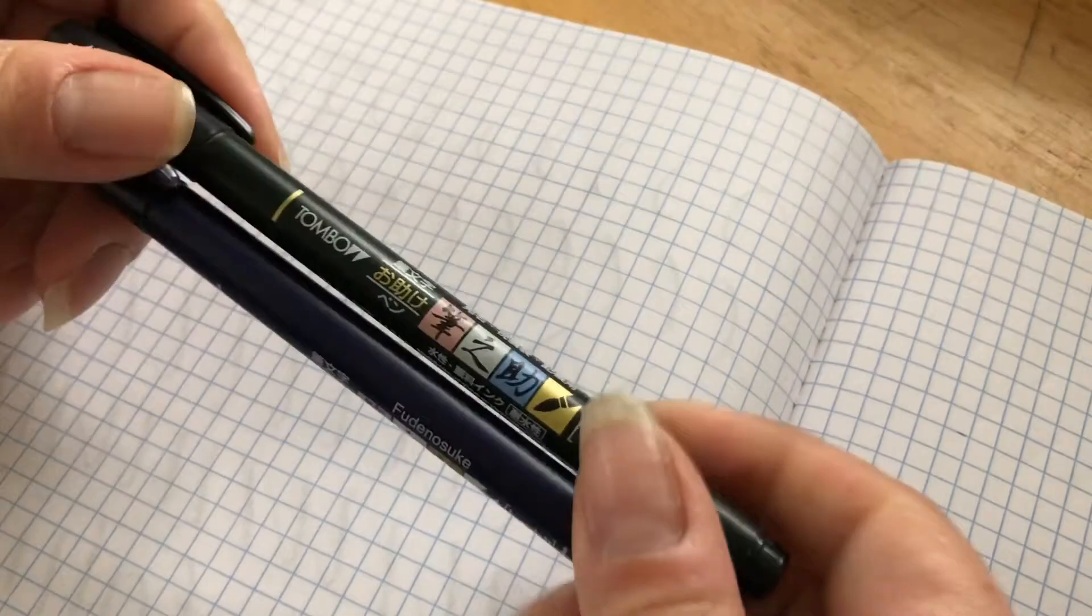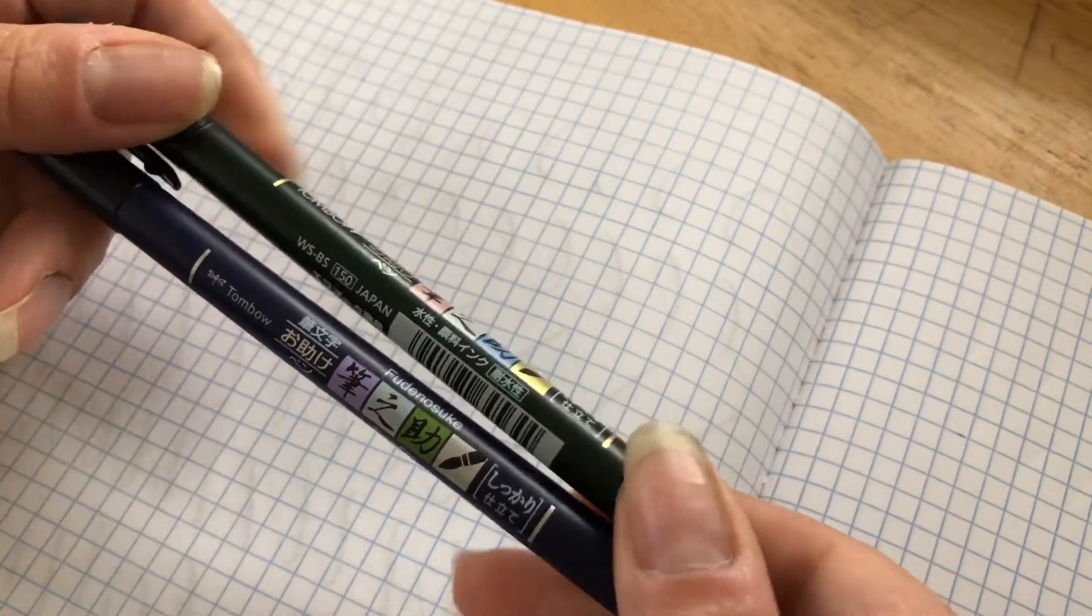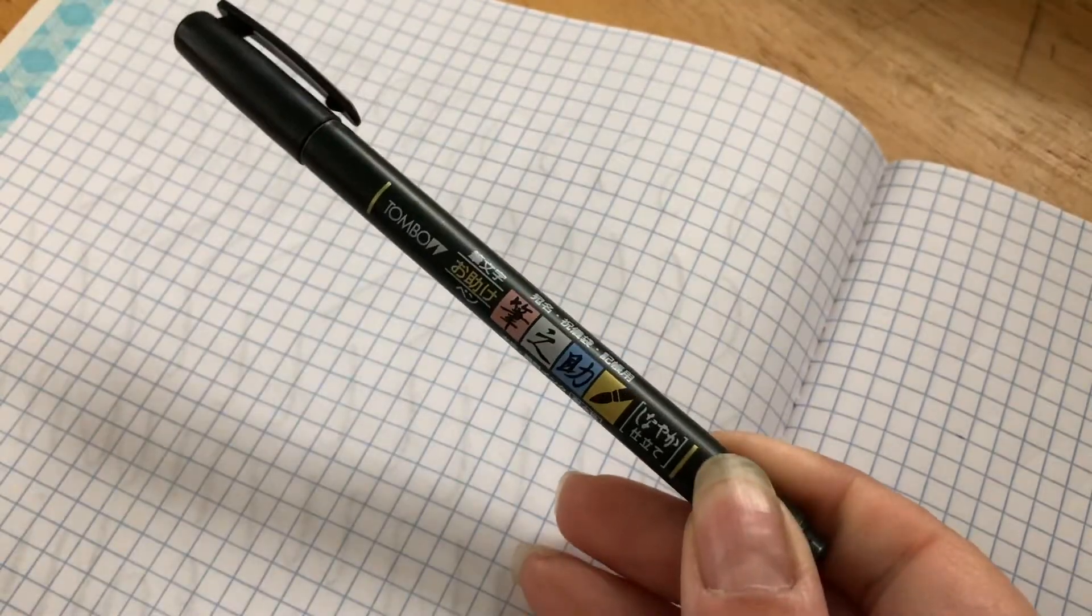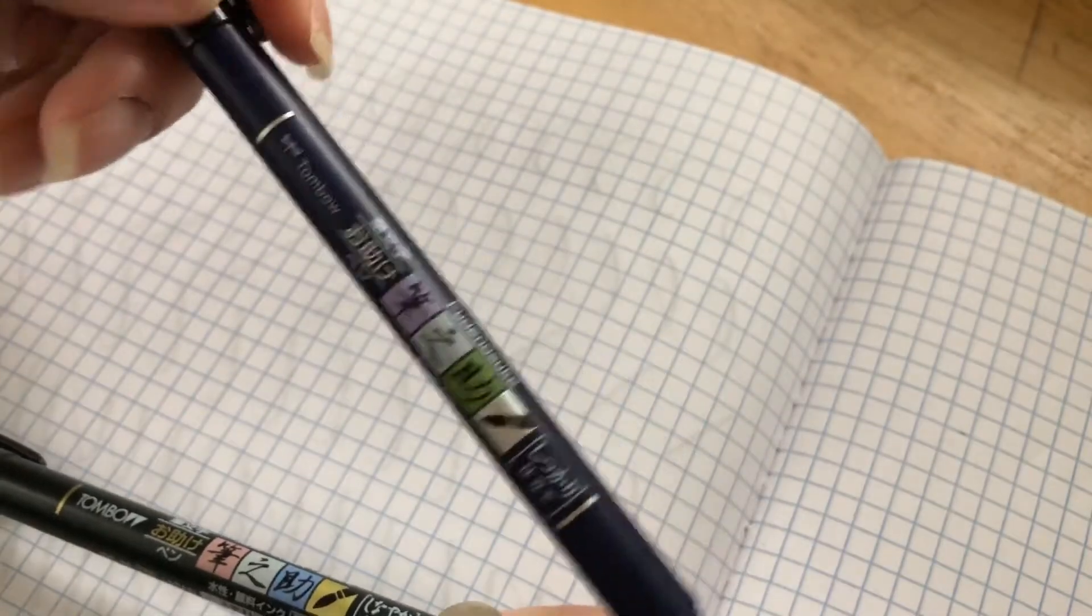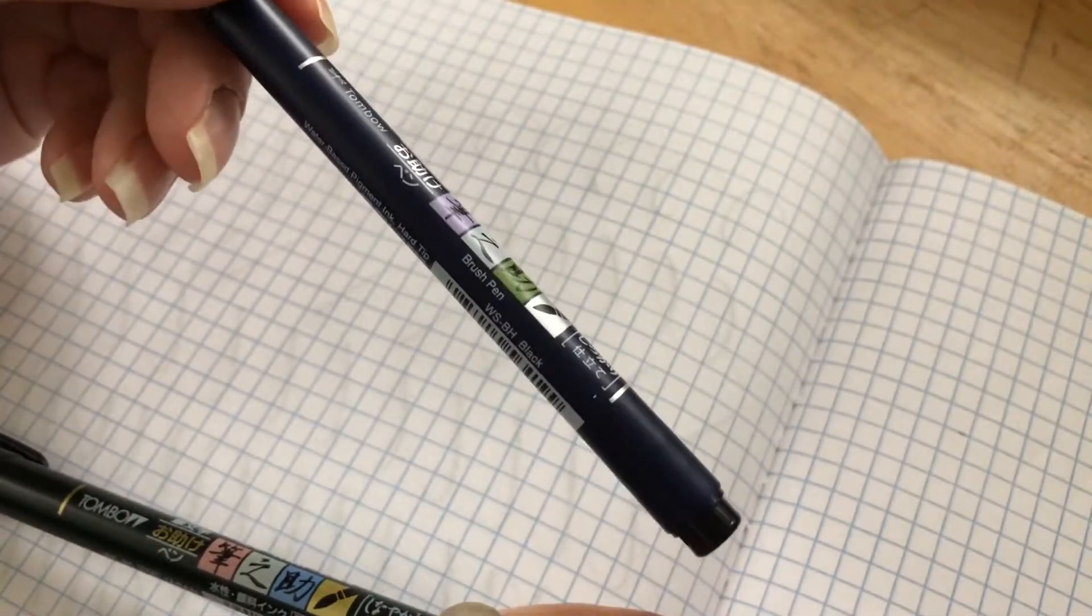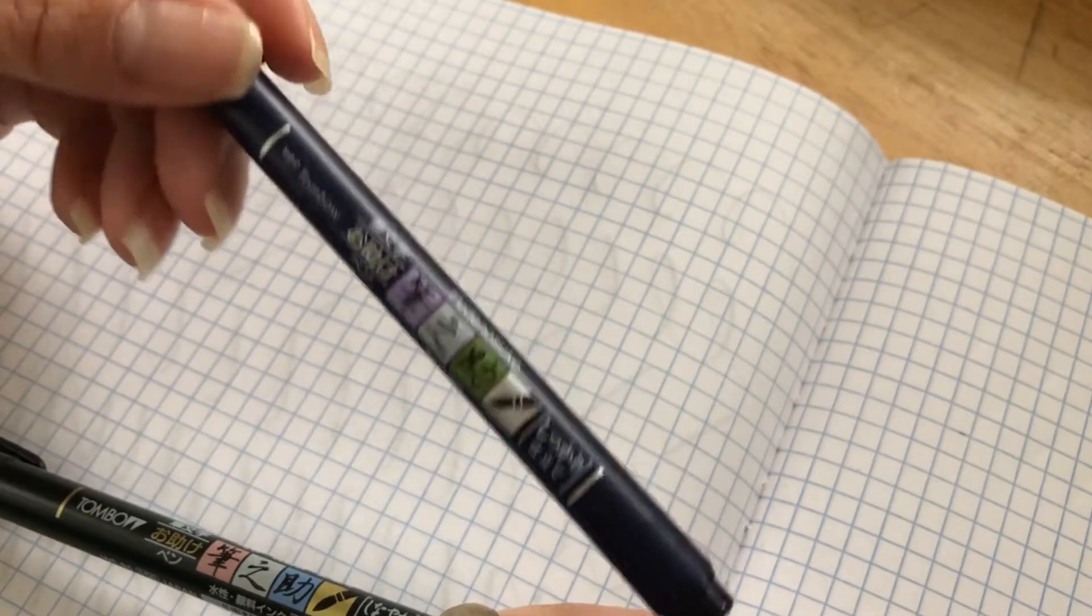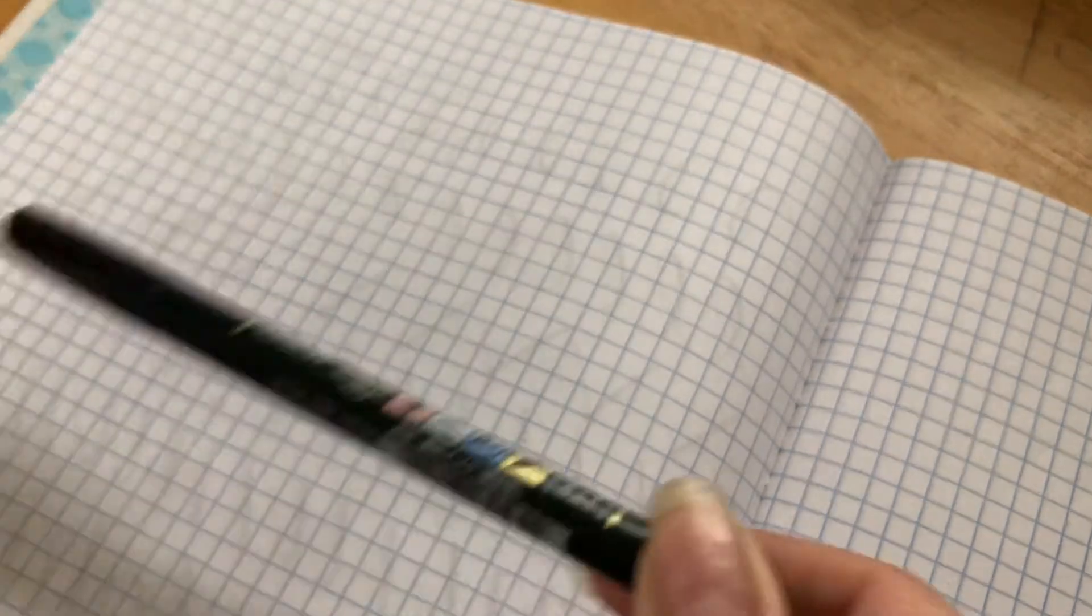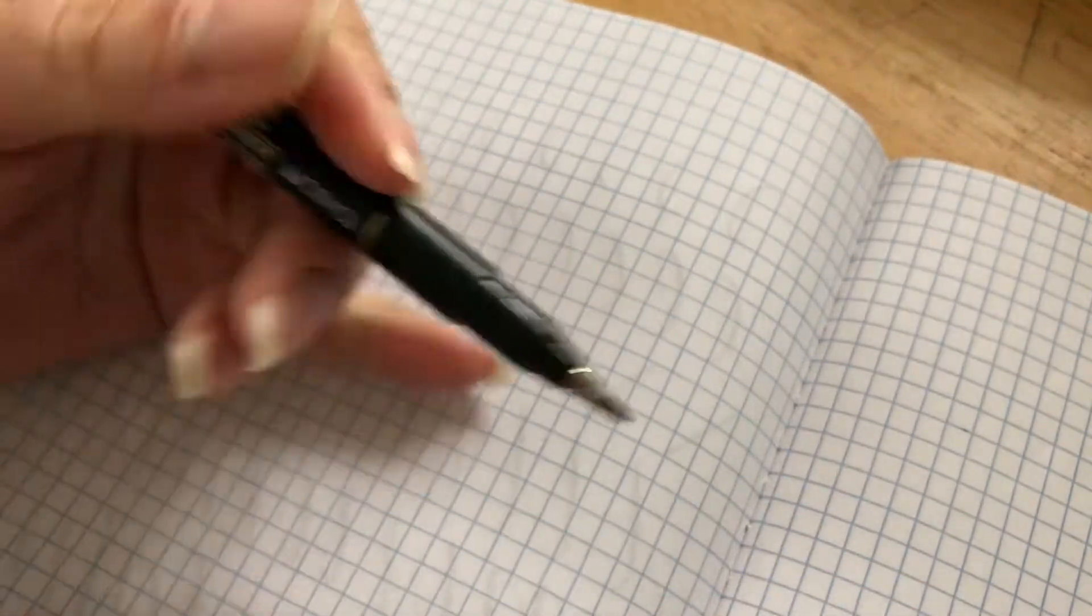For all beginners to brush lettering, I recommend investing in the Tombow Fudenosuke pens. The dark barrel is the soft tip and the blue barrel is the hard tip. Many prefer the hard tip as beginners, but I like the soft tip. It's a little more forgiving for me being left-handed.